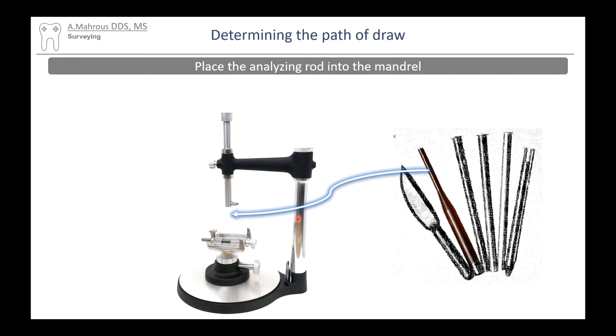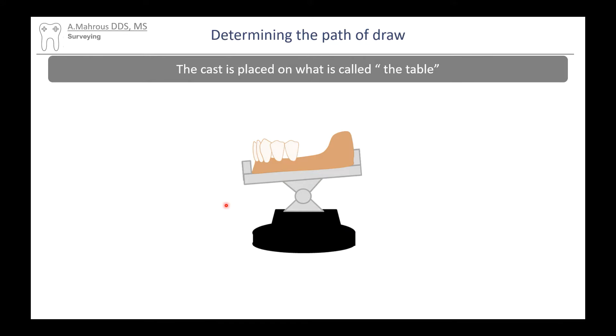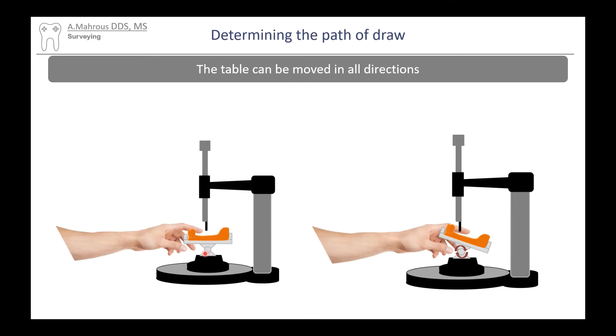We also have a carbon marker along with a lead shield. The first thing we're going to do is place that analyzing rod into the mandrel, which is this part right here. We're going to place our cast onto the table, this instrument right there. That table allows you to move your cast in all directions around all axes, thanks to this universal ball joint right here.